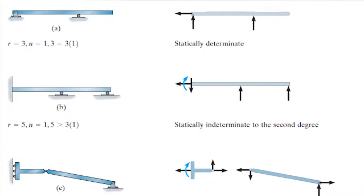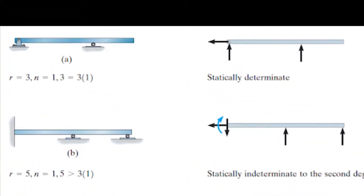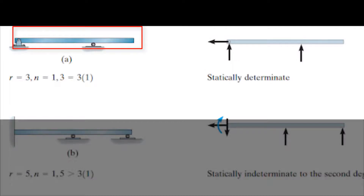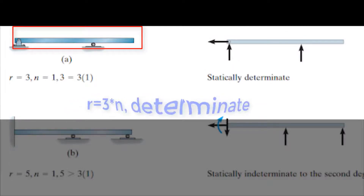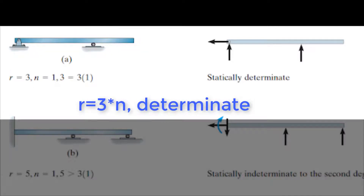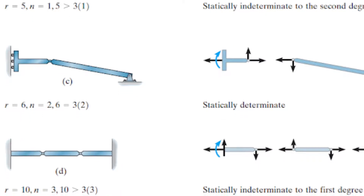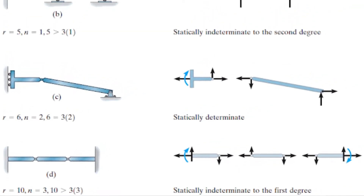The first beam has three unknown reactions: two vertical forces and one horizontal force, as shown in this figure. So r equals 3, which equals 3 times n, and the beam is determinate. We can apply the same principle for the remaining beams.